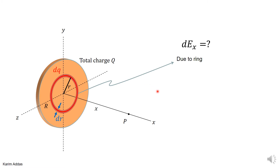This is how we illustrate the problem of the disk. We can cut the disk into rings — here is one of the rings the disk consists of. This ring has a radius r and a thickness dr. Imagine the disk consists of many rings right next to each other with different radii, and we want to get the electric field due to all those rings.